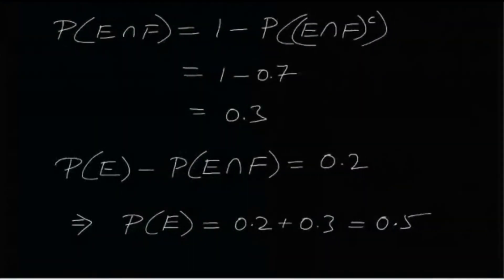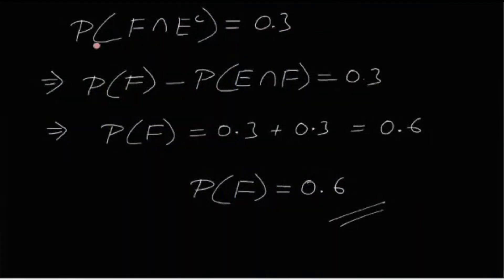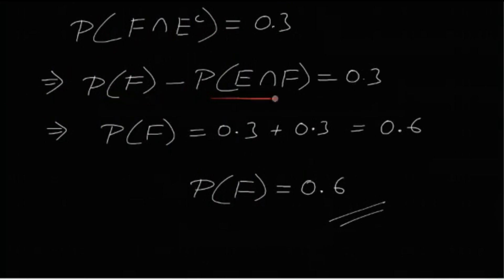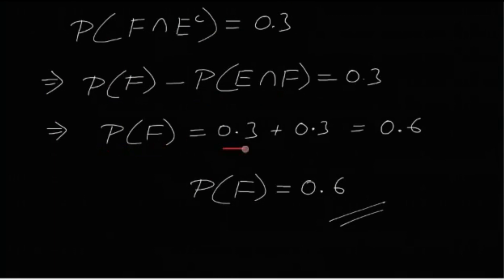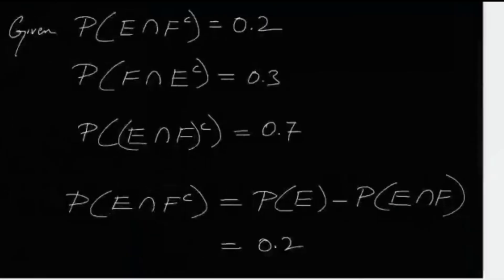What about the other options? P(F ∩ E^c) = P(F) − P(E ∩ F) = 0.3. Since P(E ∩ F) = 0.3, we get P(F) = 0.3 + 0.3 = 0.6. Option C says P(F) = 0.6, so option C is true.